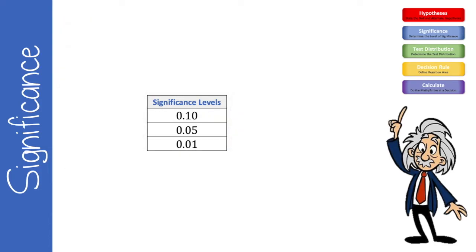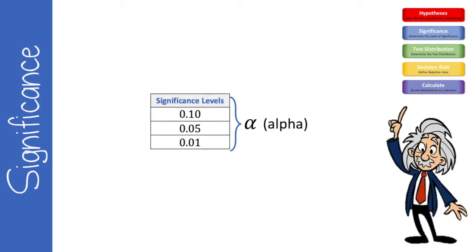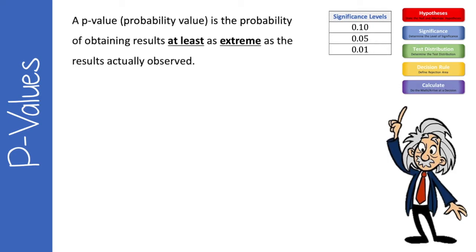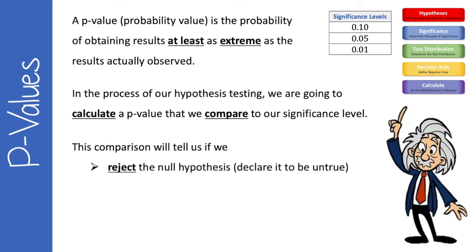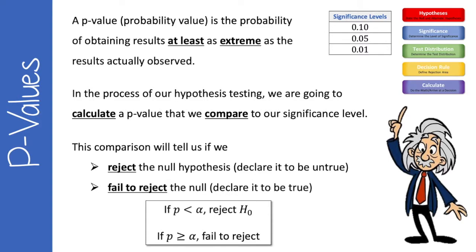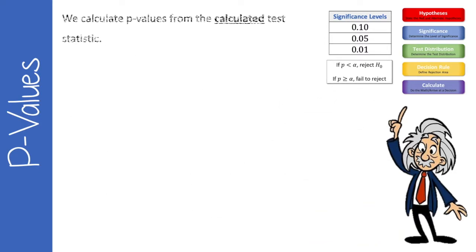These significance levels are called alpha, and they help us determine one of two approaches to decision rules. A p-value, or probability value, is the probability of obtaining results at least as extreme as the results actually observed. In hypothesis testing we calculate a p-value and compare it to our significance level: if p is less than alpha we reject the null hypothesis; if p is greater than or equal to alpha we fail to reject the null. This is called our decision rule.